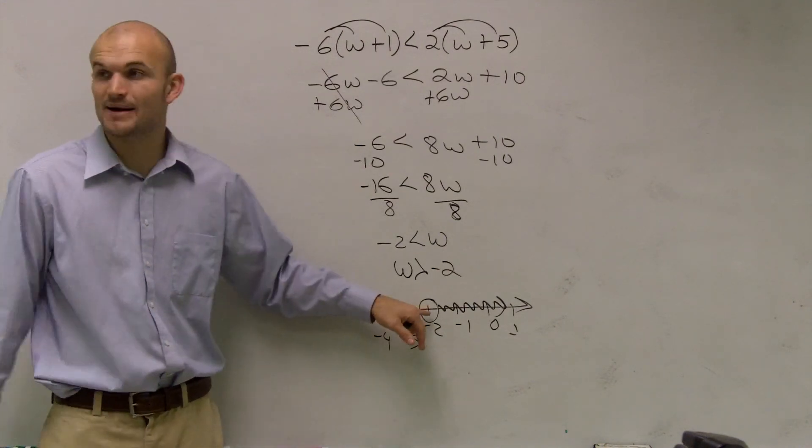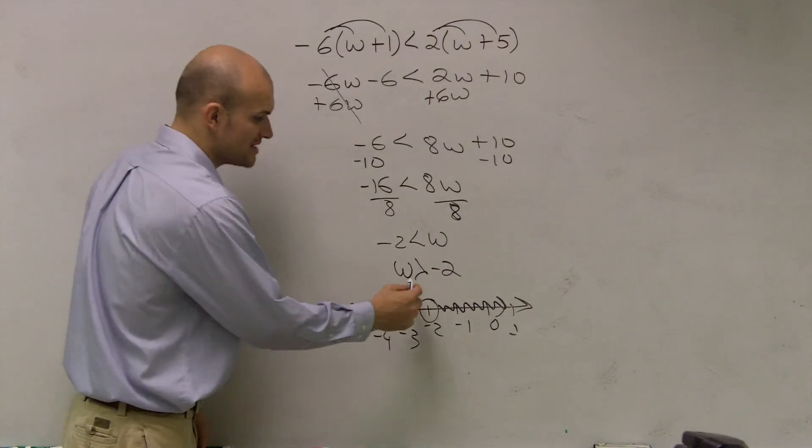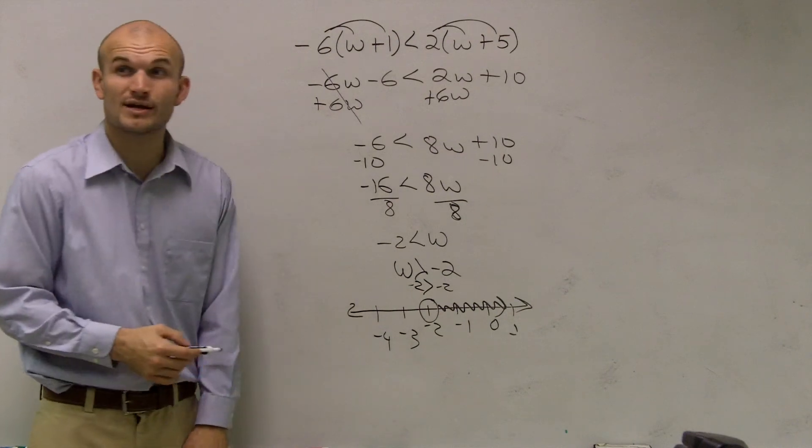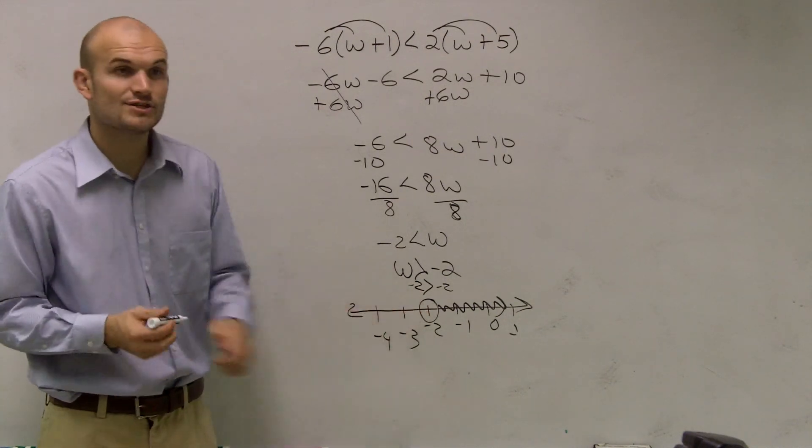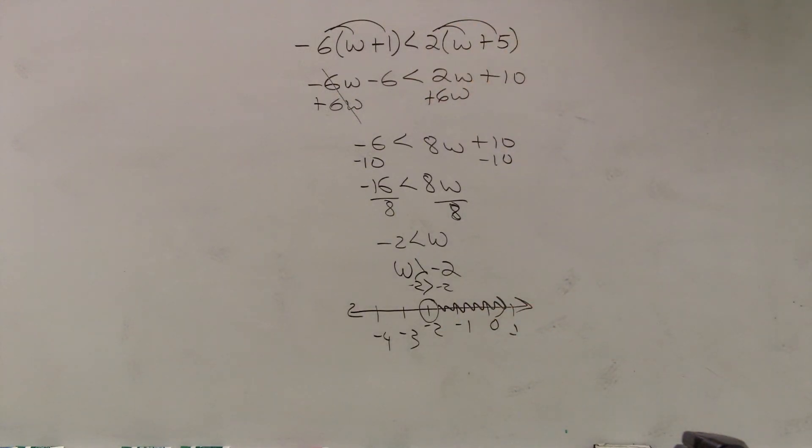Lastly, we're going to take a look at this and say, am I going to fill in my dot or am I going to leave it open? Well, remember, we can always do test intervals. Negative 2 is greater than negative 2. Is negative 2 greater than negative 2? No, it's false. Therefore, negative 2 is not a part of my solution. So it's going to be left open.